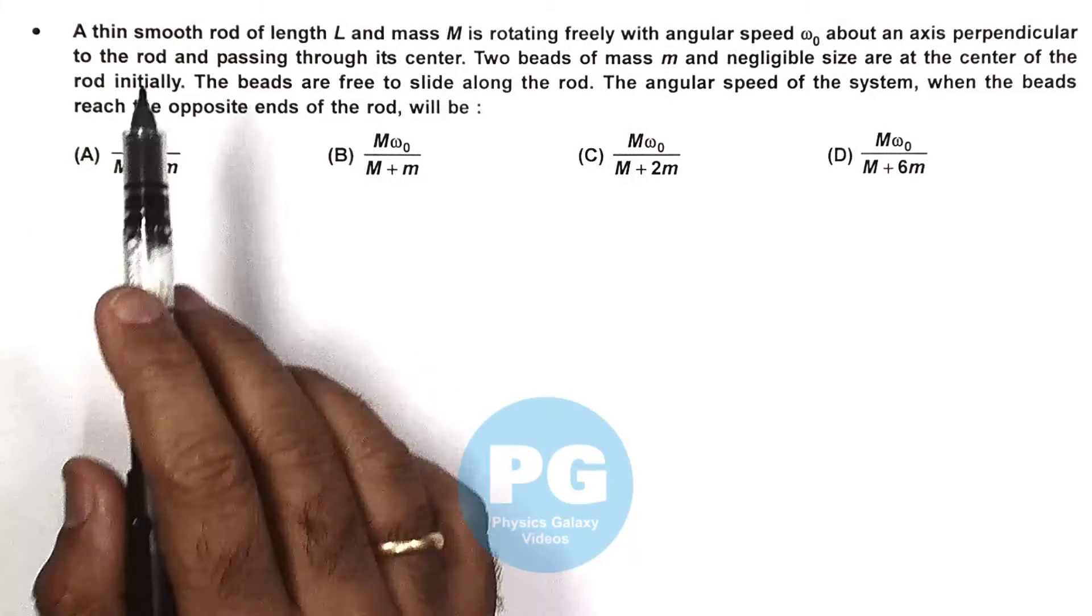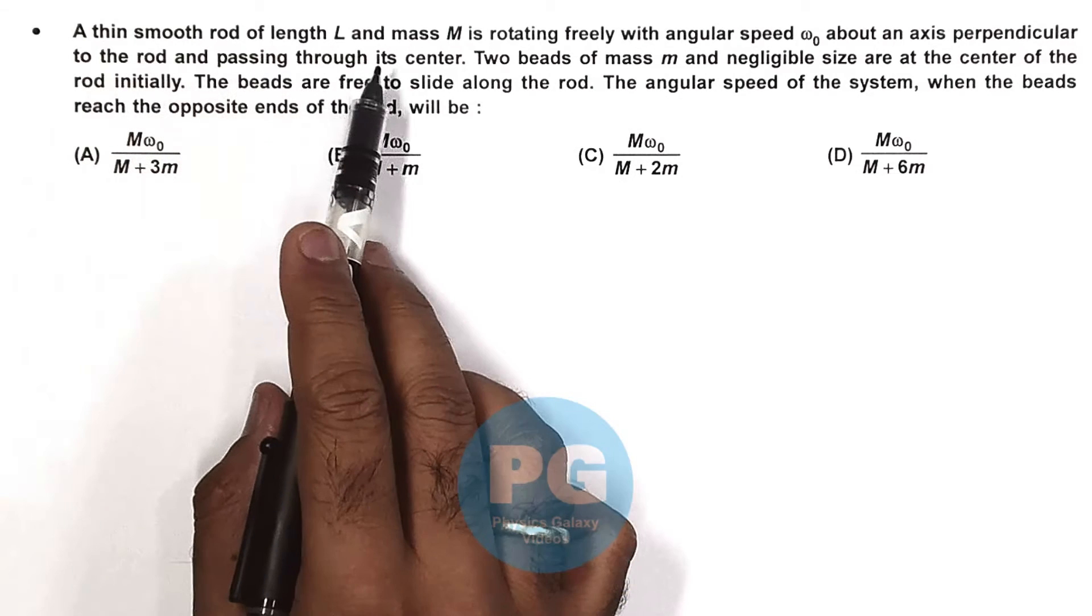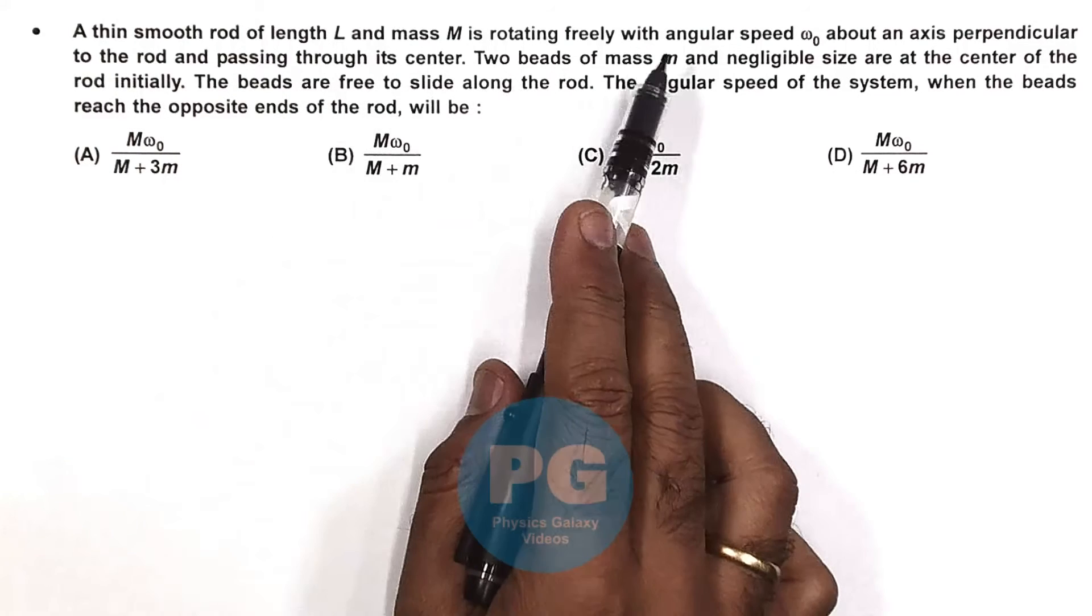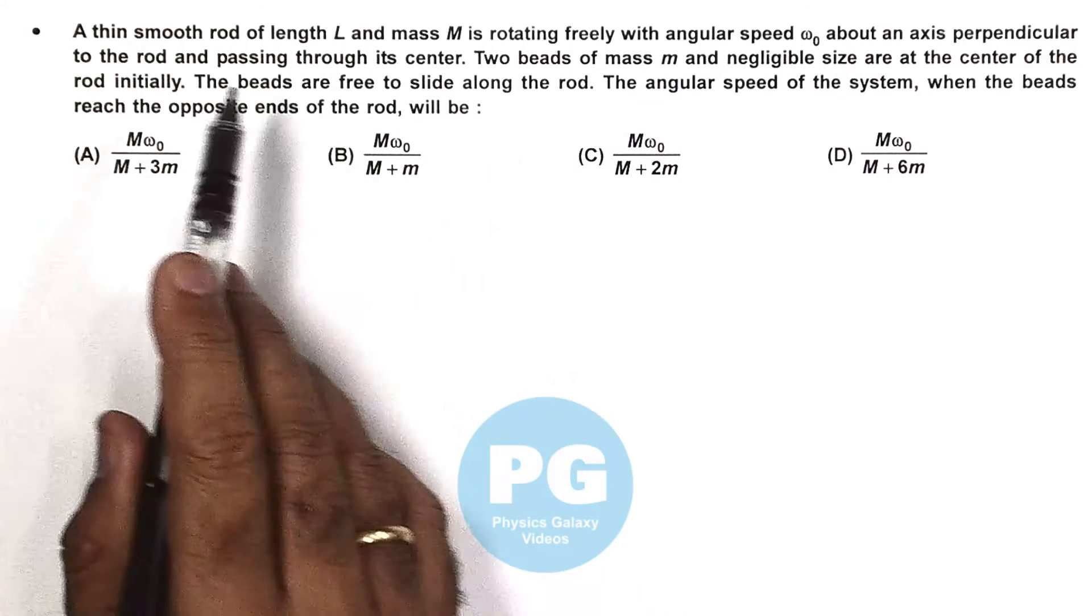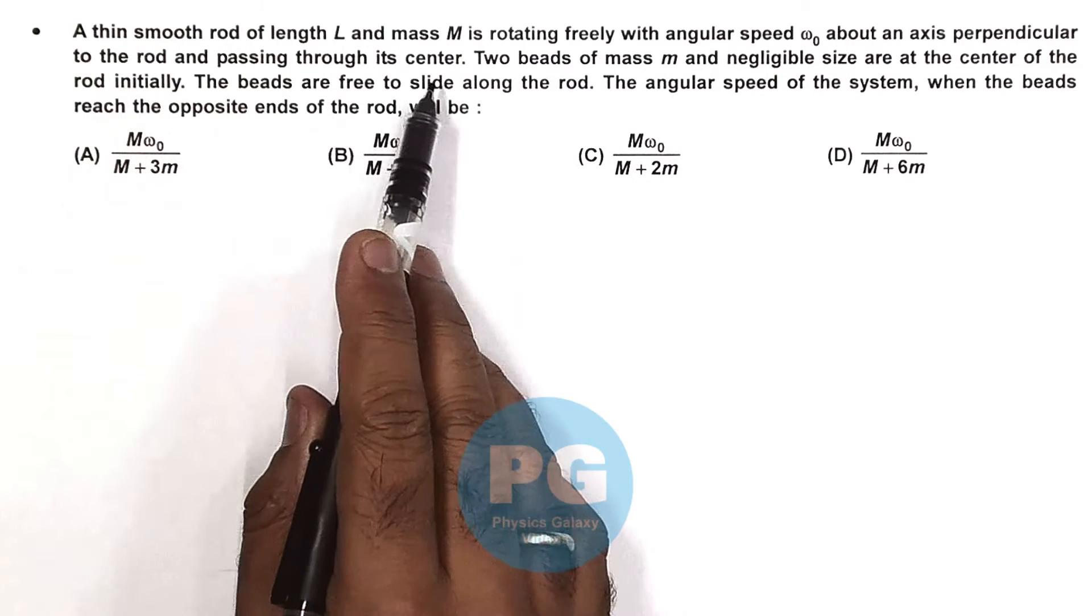In this question it says, a thin smooth rod of length L and mass M is rotating freely with angular speed omega naught about an axis perpendicular to the rod and passing through its center.